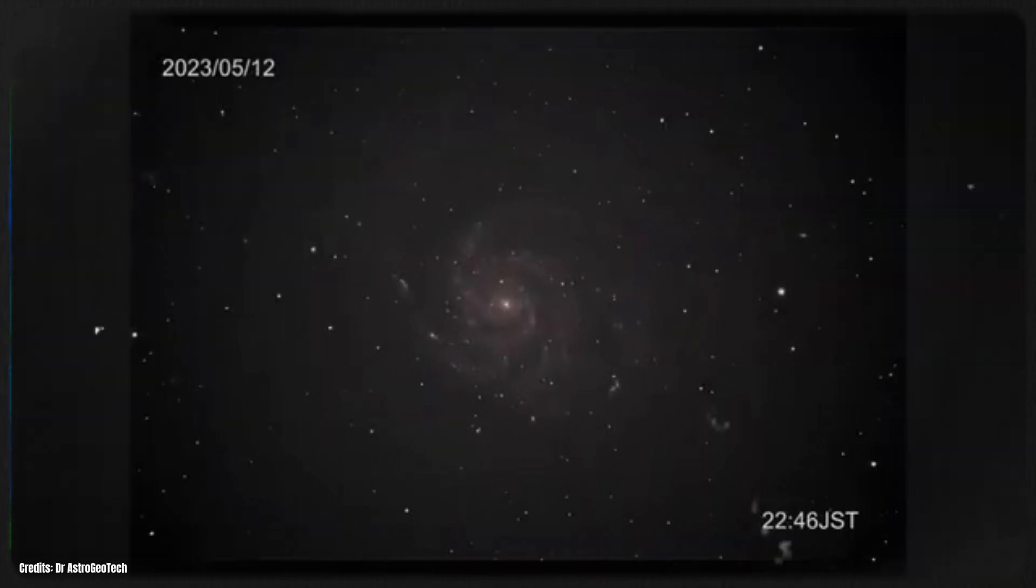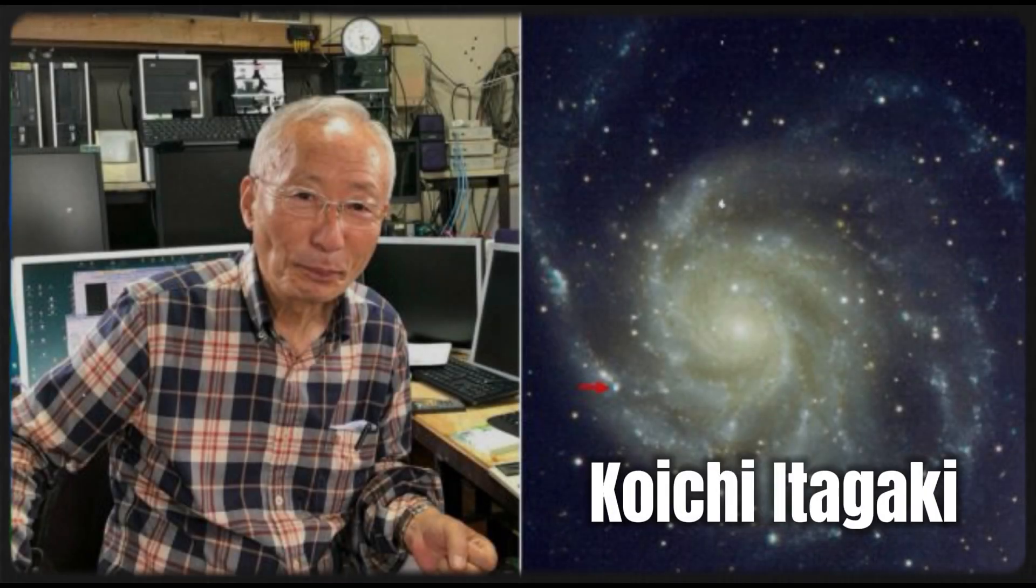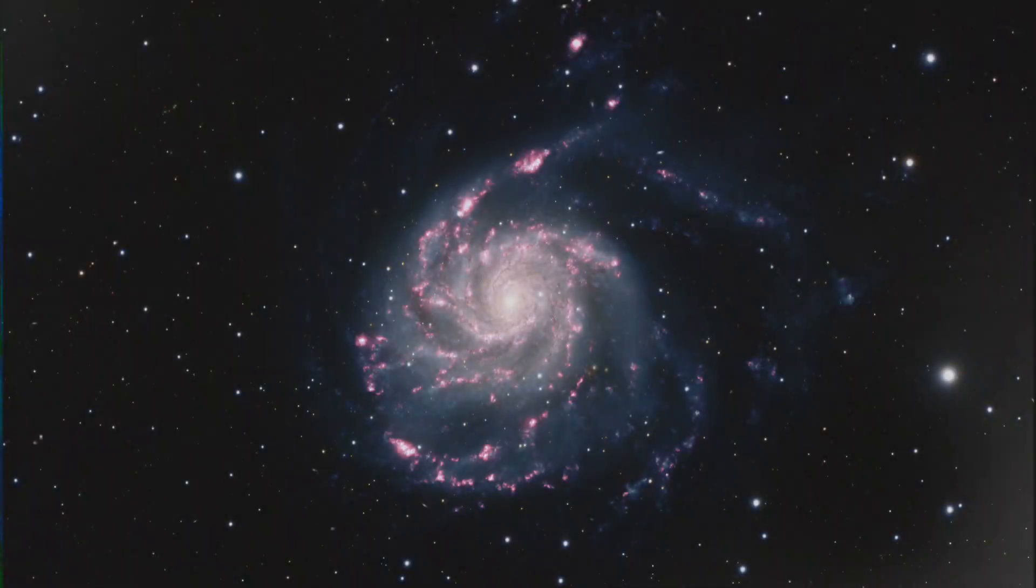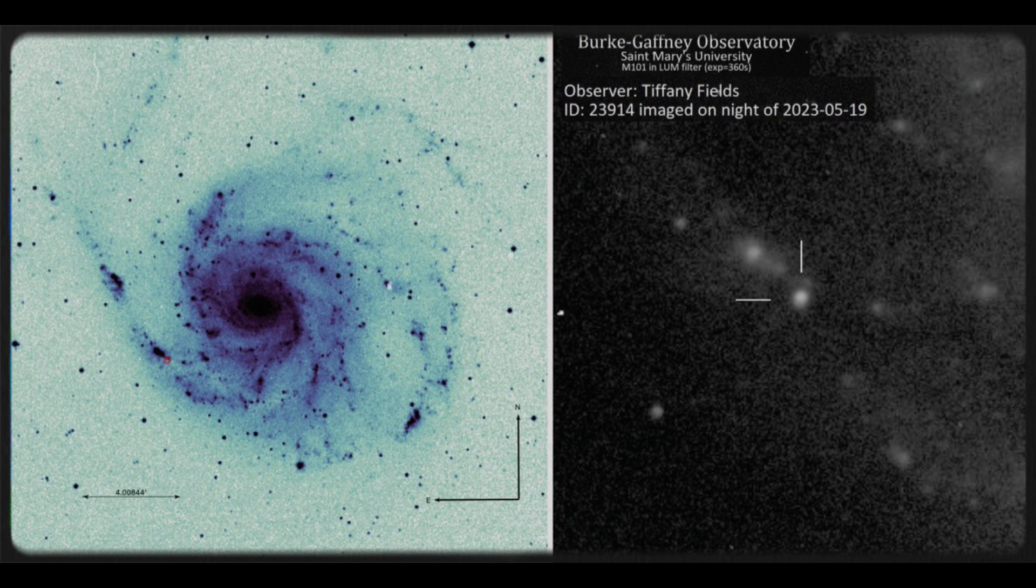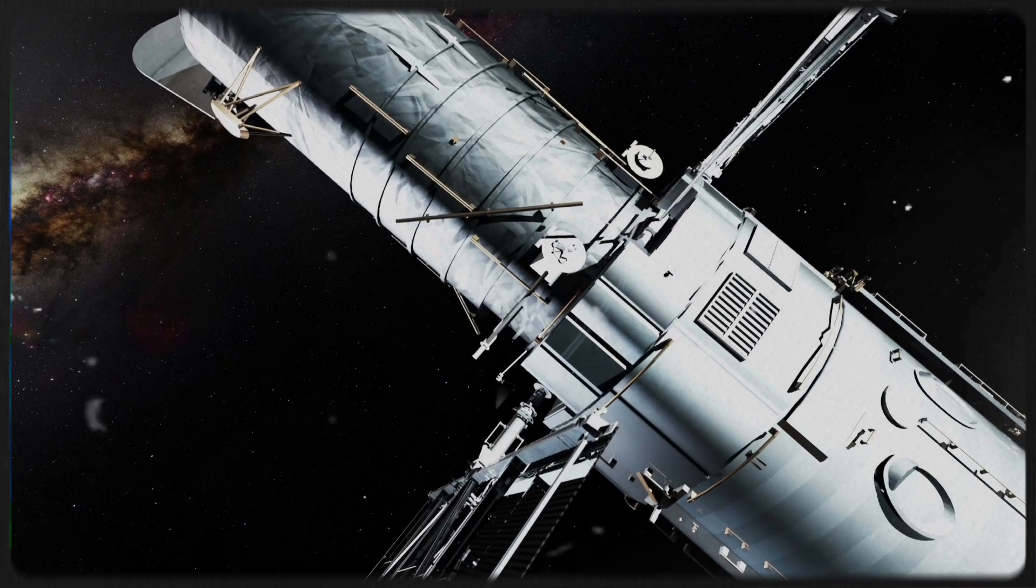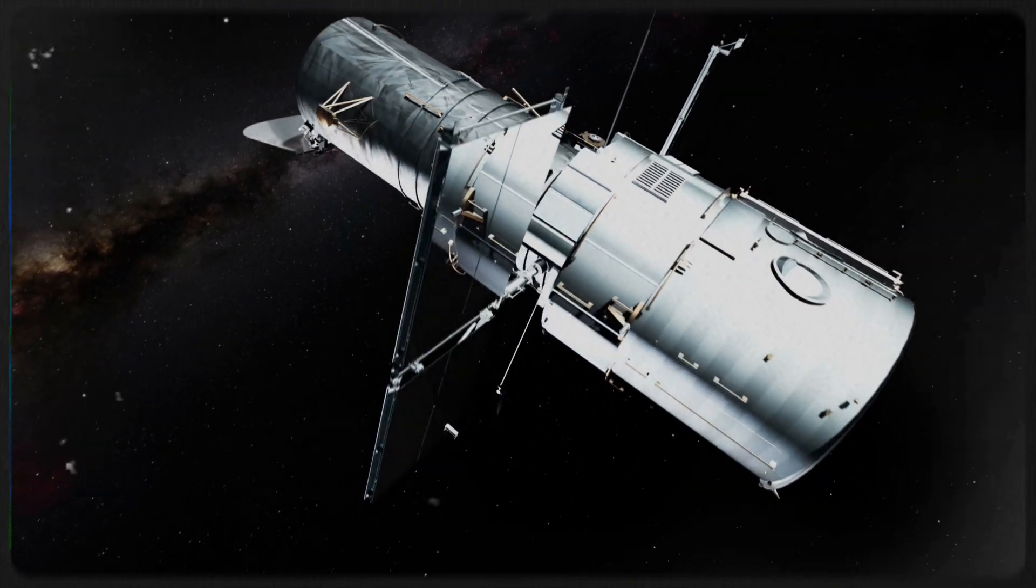The discovery of SN2023EXF was an astronomical triumph. Koichi Itagaki, an amateur astronomer famous for finding supernovae, first noticed the rapidly brightening spot on the edge of Messier 101 using his modest 0.35-meter telescope. As soon as the discovery was announced, the global astronomy community leapt into action. Telescopes around the world, including the Hubble Space Telescope, quickly focused on the new supernova.